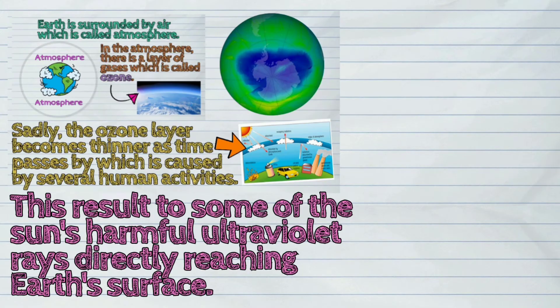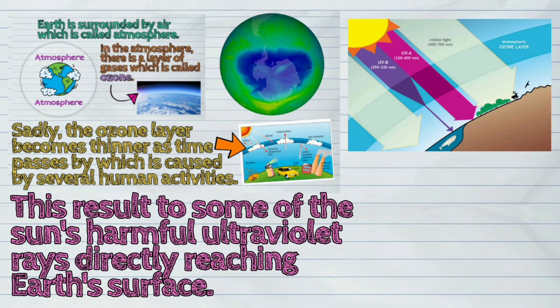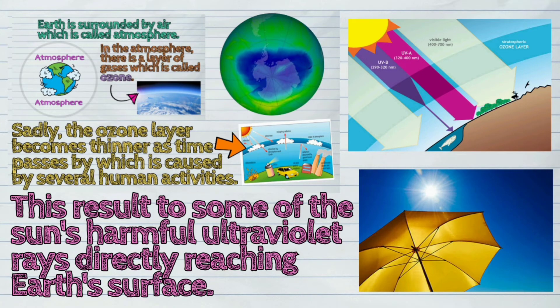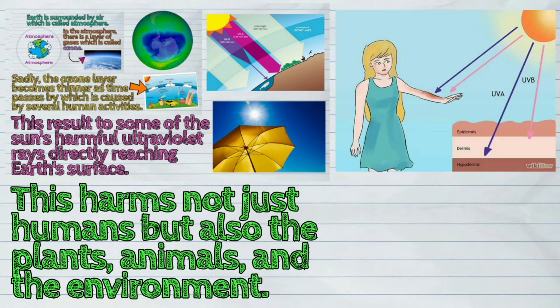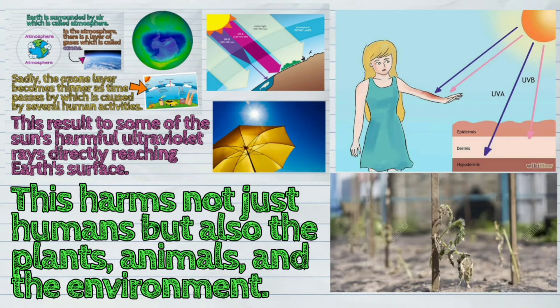This results in some of the sun's harmful ultraviolet rays directly reaching Earth's surface. This harms not just humans but also the plants, animals, and the environment.